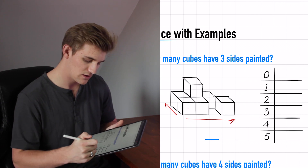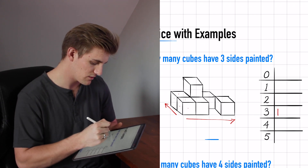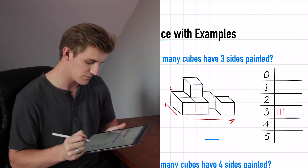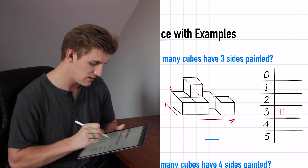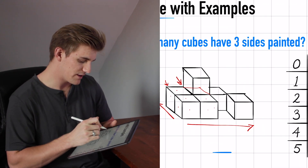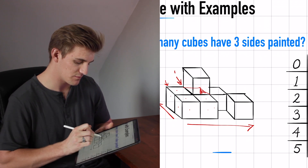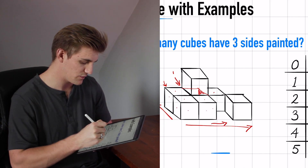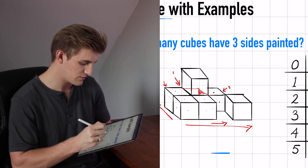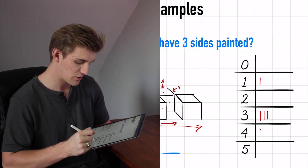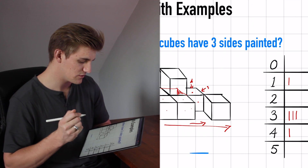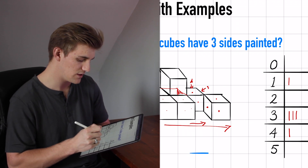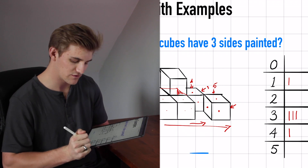Starting at the front corner: one, two, three — tick mark for three. Moving back: one, two, three on the backside — another tick for three. Next cube: one, two, three — another tick for three. There's a hidden cube behind that we can't see, which has one side because it's butted up against the adjacent cube — tick for one. Moving left: one, two, three on the right side and four on the backside — tick for four. Then a free-floating cube: one, two, three, four on the right and five on the back — tick for five.